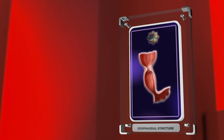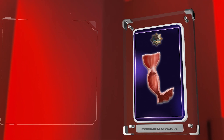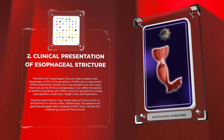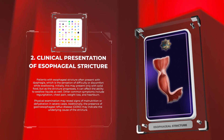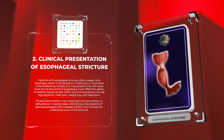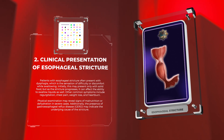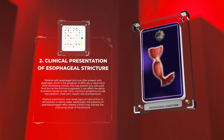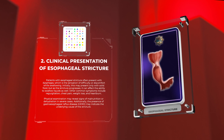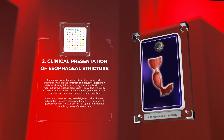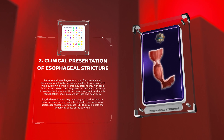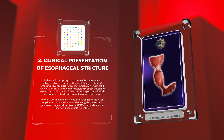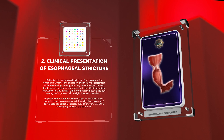Patients with esophageal stricture often present with dysphagia, which is the sensation of difficulty or discomfort while swallowing. Initially, this may present only with solid food, but as the stricture progresses, it can affect the ability to swallow liquids as well. Other common symptoms include regurgitation, chest pain, weight loss, and heartburn.